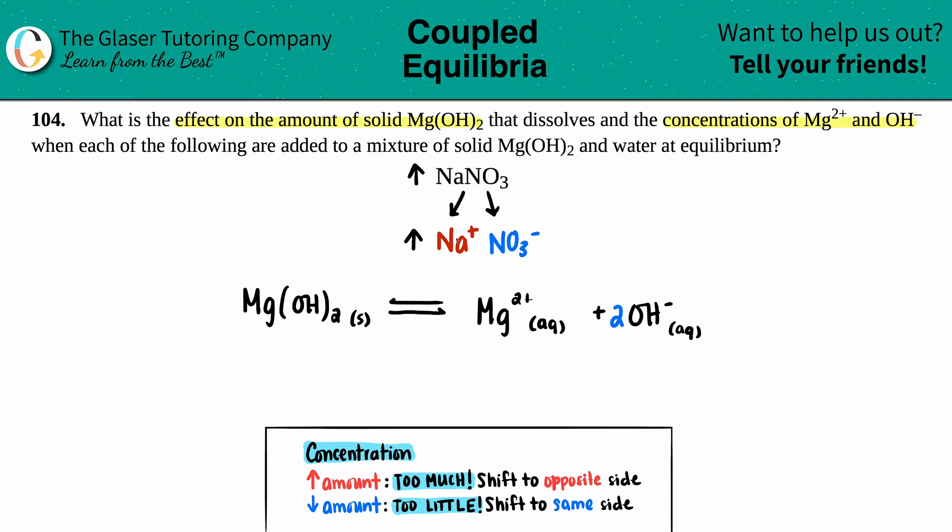NaNO3 is a neutral salt. And if it's neutral, it's not going to want to react with anything in here. So since I don't have matching ions and I can't form an acid base equation because this is neutral, there is no effect. So the Mg(OH)2 will remain the same. The Mg2+ will remain the same. And the OH- will remain the same. They will all remain the same.